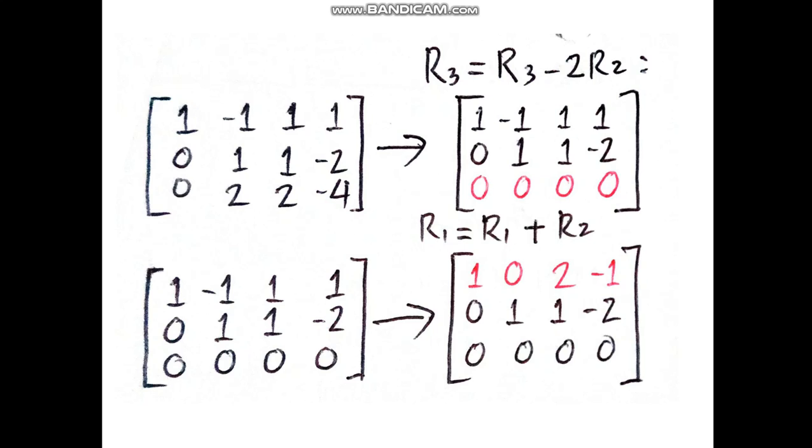To get the next matrix, we are going to add R1 and R2. So the new values of our first row are 1, 0, 2, -1.